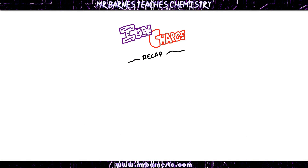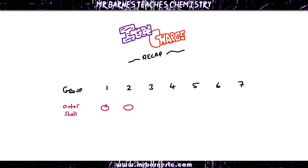To work out the charge for any ion for any element in the periodic table, the first thing you need to do is look at the groups. Starting with groups 1 to 7 — the group number tells you the number of electrons in the outer shell. So group 1 has 1 electron in the outer shell, group 2 has 2, group 3 has 3, group 4 has 4, and so on all the way up to group 7.